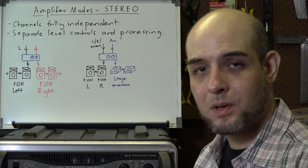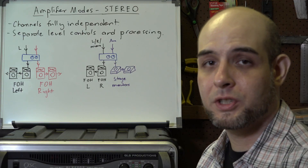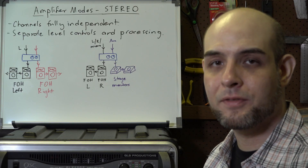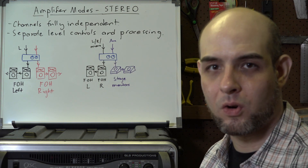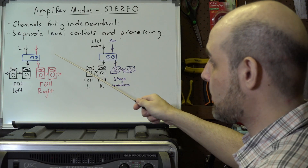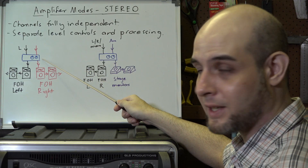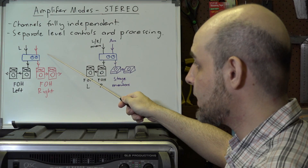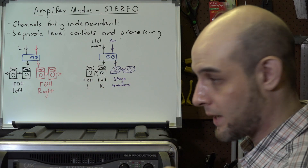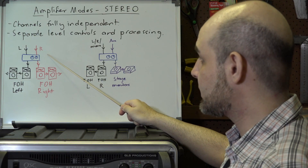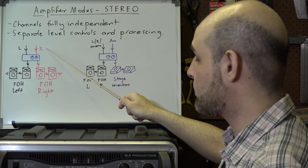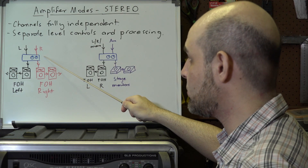This mode is probably the most versatile because you effectively have two mono power amplifiers you can deploy in whatever way you want. The most common deployment will definitely be as front of house left and front of house right, where your left and right main outputs from your mixer go to channels one and two.